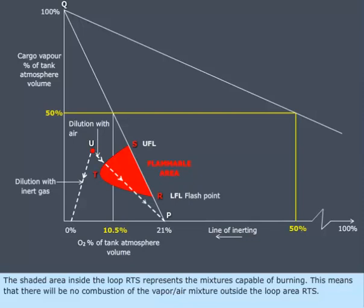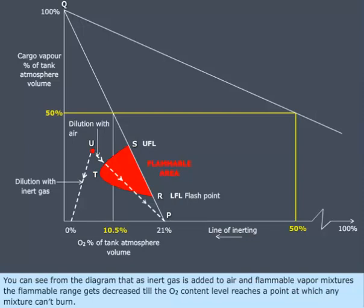The shaded area inside the loop RTS represents the mixtures capable of burning. This means that there will be no combustion of the vapor air mixture outside the loop area RTS. As inert gas is added to air and flammable vapor mixtures, the flammable range gets decreased till the O2 content level reaches a point at which any mixture can't burn.